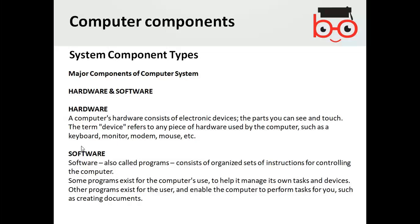The major components of a computer are hardware and software. Computer hardware consists of electronic devices — the parts you can see and touch. The term 'device' refers to any piece of hardware used by the computer, such as a keyboard, mouse, or modem. Software, also called a program, consists of an organized set of instructions for controlling the computer. Some programs manage the computer's own tasks and devices; others enable the user to perform tasks such as creating documents.